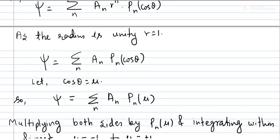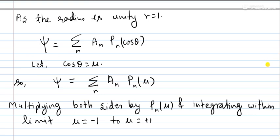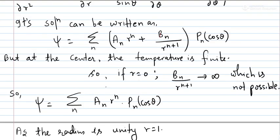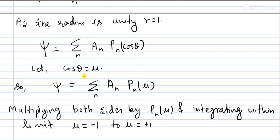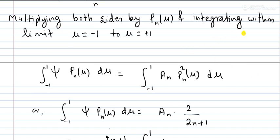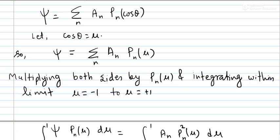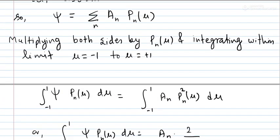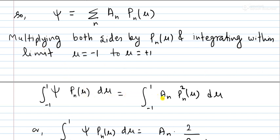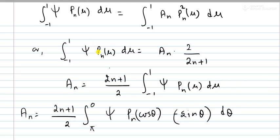Our reduced solution is: ψ = Σₙ Aₙ rⁿ Pₙ(cosθ). On the surface of the sphere, r = 1, so ψ = Σₙ Aₙ Pₙ(cosθ). Letting cosθ = μ and applying orthogonality — multiplying both sides by Pₙ(μ) and integrating from −1 to +1 — we get: ∫₋₁¹ ψ Pₙ(μ) dμ = Aₙ ∫₋₁¹ Pₙ²(μ) dμ.